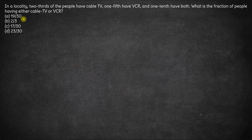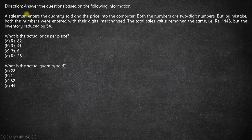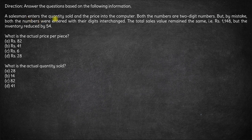Here we have a salesman who enters the quantity sold and the price into the computer. Both numbers are two-digit numbers, but by mistake both numbers were entered with their digits interchanged. The total sales value remained the same — that is 1148 — but the inventory reduced by 54.